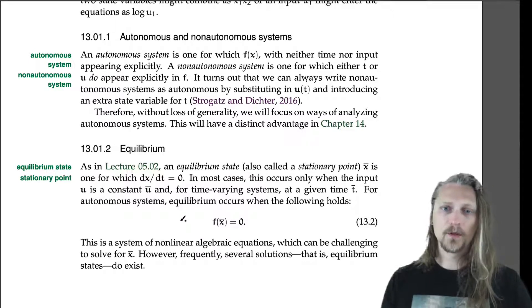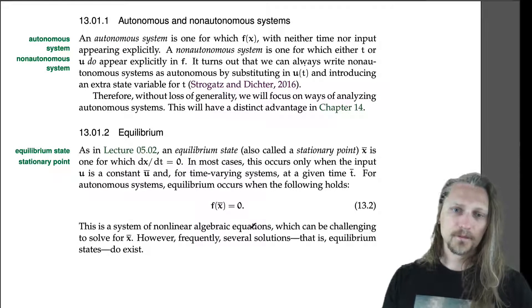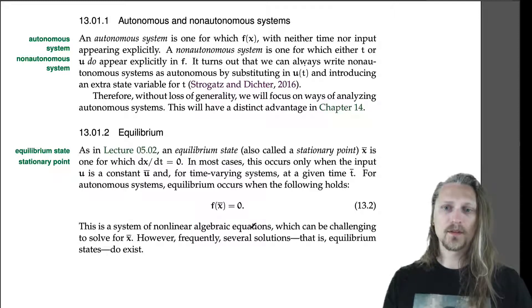For autonomous systems, equilibrium occurs when the following holds: f of x equals 0. Okay, this is a system of nonlinear algebraic equations, which can be challenging to solve for equilibrium x. However, frequently several solutions, that is equilibrium states, do exist, so we can solve for them.